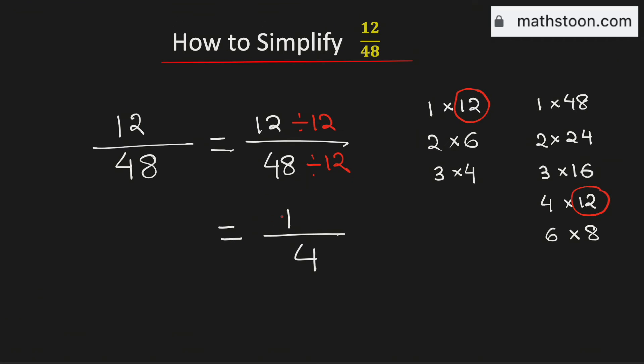So we can say that 1 over 4 is the simplified reduced form of the fraction 12 over 48. And this is our final answer. Thank you for watching. Please like, share and comment on the video. Also do subscribe the channel.